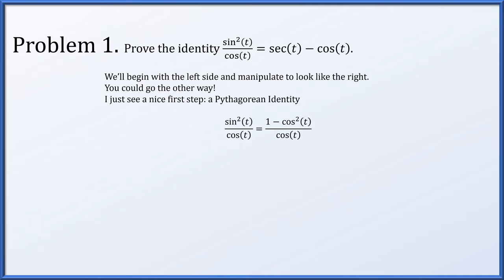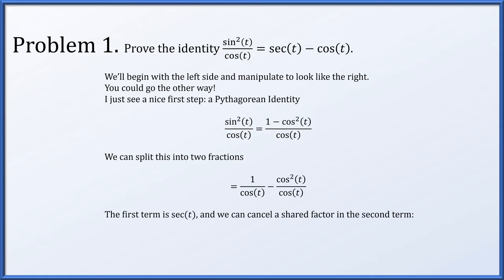So we have sine squared t over cos t, the original left-hand side. I'm going to replace sine squared t with 1 minus cosine squared t. Now we can split this into two fractions to get 1 over cosine t minus cosine squared t over cosine t. The first term by definition is secant of t, and in the second term we can cancel a shared factor. So we get secant t minus cosine t, which was the right-hand side we desired. Starting with the left-hand side, doing one step at a time, always fully justified, we showed it is exactly equal to the right-hand side.